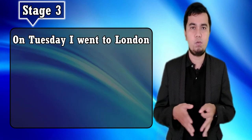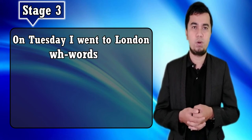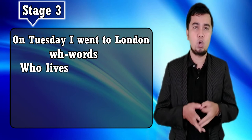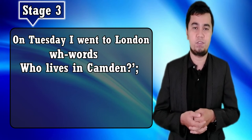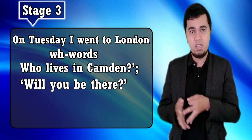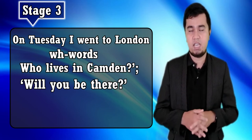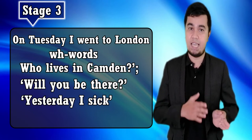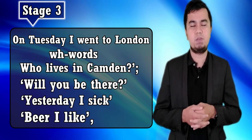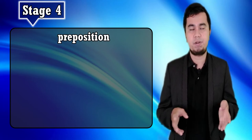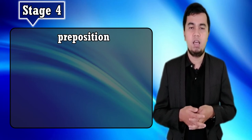The third stage is that the learner starts to move elements from the beginning of the sentence. They put adverbials at the beginning — for example, 'On Tuesday I went to London.' They use wh-words at the beginning with inversion — such as 'Who lives in Camden?' — and move auxiliaries to get yes/no questions — for example, 'Will you be there?' Typical sentences at this stage are 'Yesterday I sick' and 'Beer I like,' where the initial element has been moved from later in the sentence.